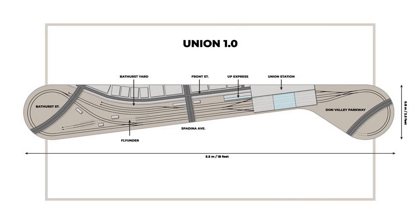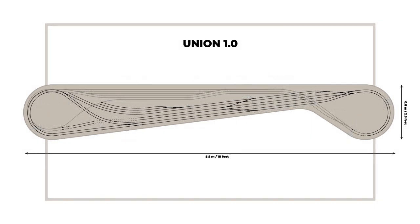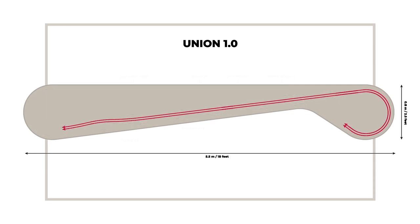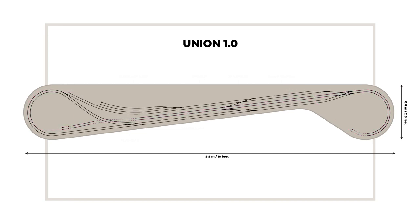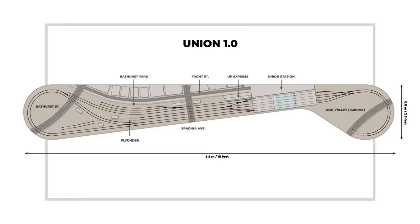Considering all this criteria, I present the track plan for Union 1.0. The plan is a very straightforward elongated figure eight. There is a double track mainline that passes through Union Station and continues on to hidden staging. The layout is designed for DC operation, and the two mainlines operate on separate cabs. Despite first appearances, there are no reversing loops — trains operate independently on the eastbound and westbound tracks, but can reverse their direction in the hidden staging.